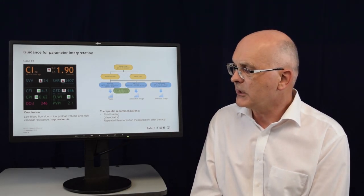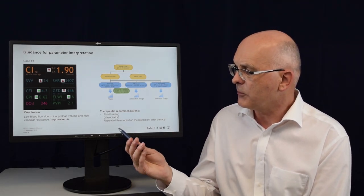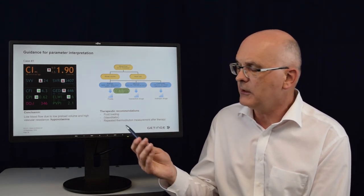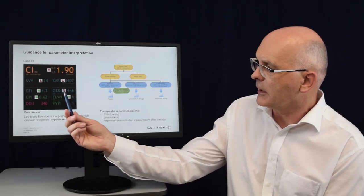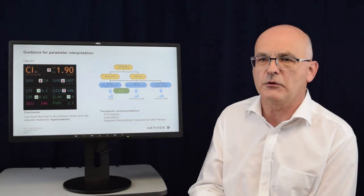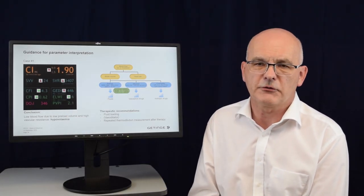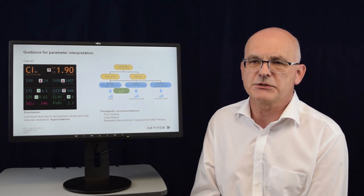It is important, when we apply therapy, to repeat the full hemodynamic evaluation measurement to get updates on the intermittent values — like blood flow and end-diastolic volume — to really see if there is a change in the patient's situation.